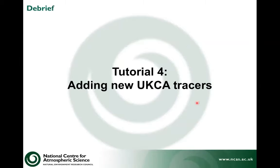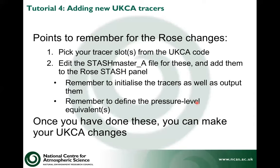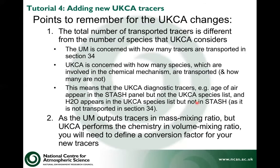When you've finished, points to remember here: you need to pick your tracer slots in the UKCA code if you're adding a new one, so have a look at where those are defined. You need to edit the STASH master file and add them to the ROWS STASH panel. Remember to initialize the tracers as well as output them, otherwise you might have some problems. You need to define pressure level equivalents as well, even if you don't intend to use them straight away. When you've done all that, you can make your UKCA changes. Just remember that the numbers here are a little bit complicated.